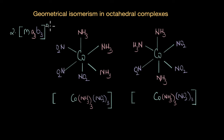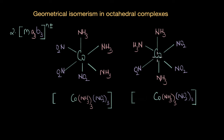The next type of octahedral complex is MA₃B₃. A common example is [Co(NH₃)₃(NO₂)₃], with three ammonia ligands and three nitro ligands. This type of complex exists in two different geometrical isomers, but we don't typically call them cis and trans, because the ligands can be considered adjacent or not in ambiguous ways.